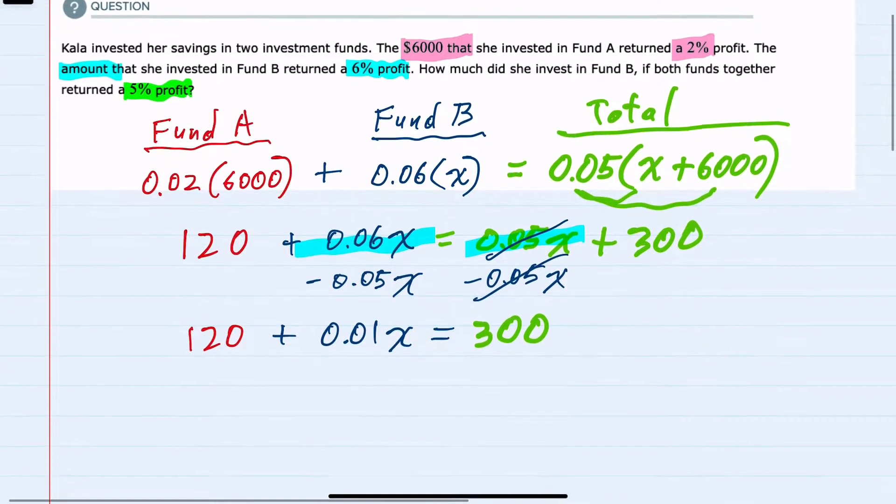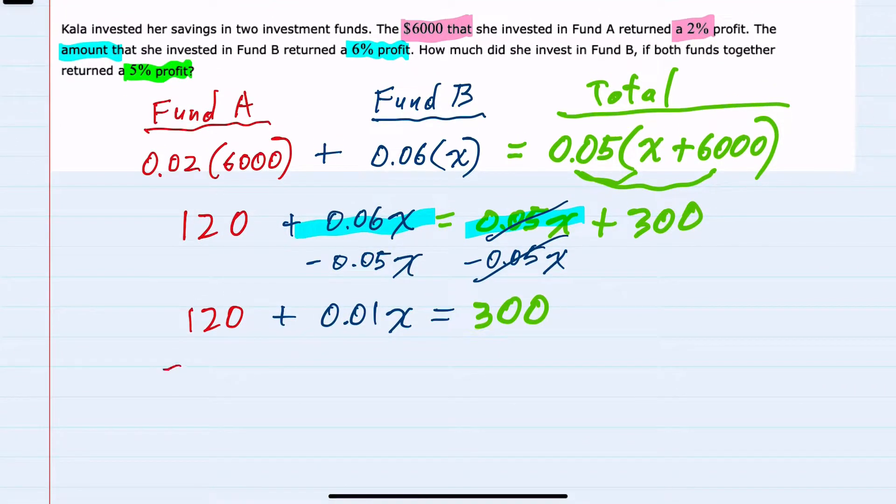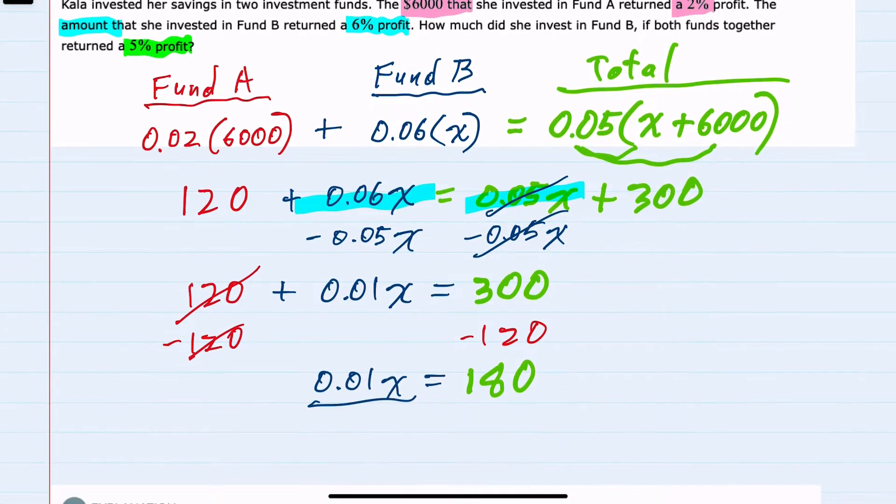Continuing to isolate the X, we can subtract the 120 to the right-hand side. That leaves us now with just 0.01X equals 180 on the right-hand side. And lastly, I can solve for X by dividing by 0.01 on both sides, leaving me with X equals 18,000.